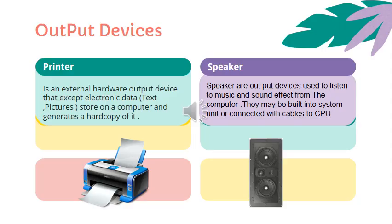Other output devices are Printer and Speaker. Printer is an external hardware device. Printers provide information on paper, which we call computer printouts. This is called a Hard Copy. Speakers are output devices used to listen to music and sound effects from a computer.